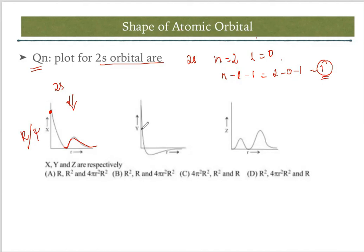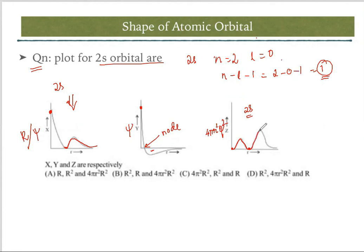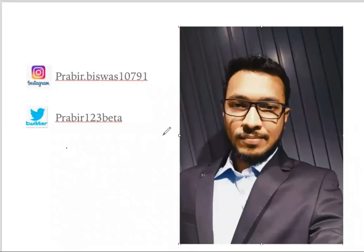The second graph starts from a higher point, comes down with a negative region, indicating this is ψ (wave function). The third graph starts from the center, goes up, touches the x-axis, then goes up with increasing amplitude — this is 4πr²ψ². So the answers are: first graph = r² or ψ², second = ψ, third = 4πr²ψ². The answer is option B.